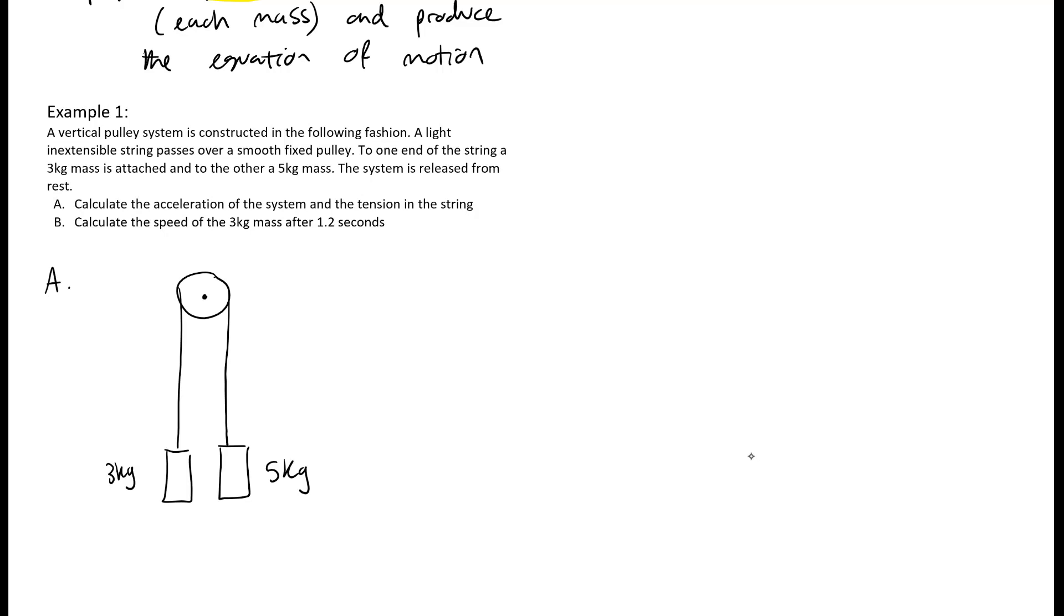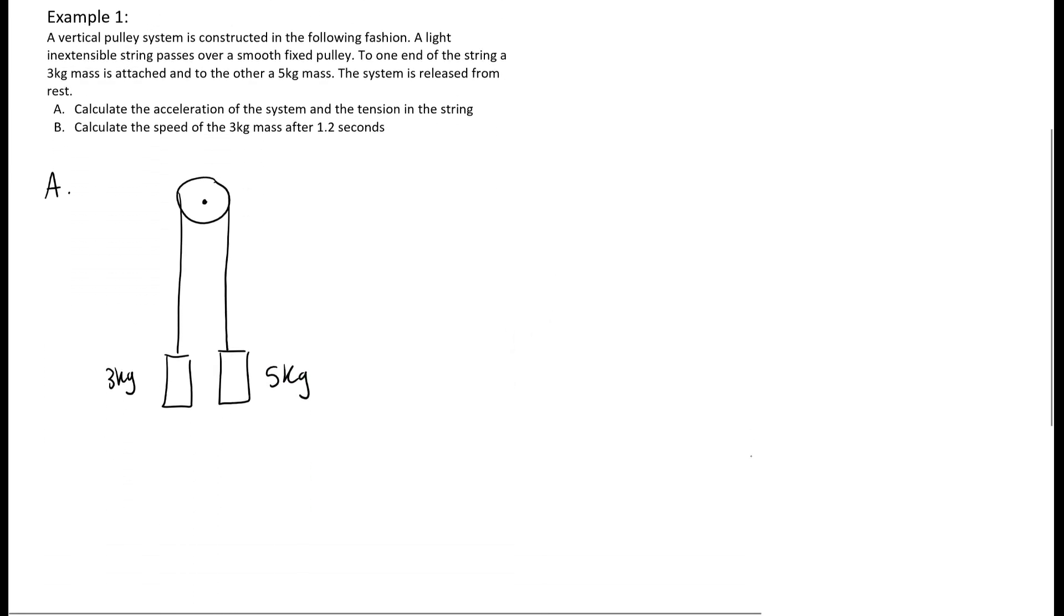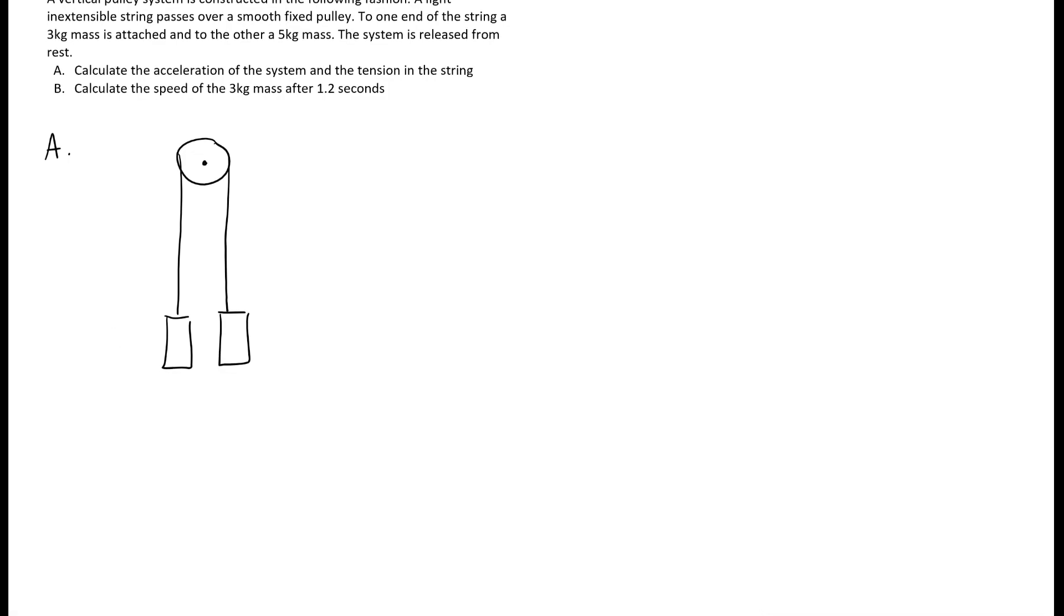Step 2 would be to label all of the forces acting on the weights. Each weight must have weight acting on it, so this one has 3g acting and this one has 5g acting on it.